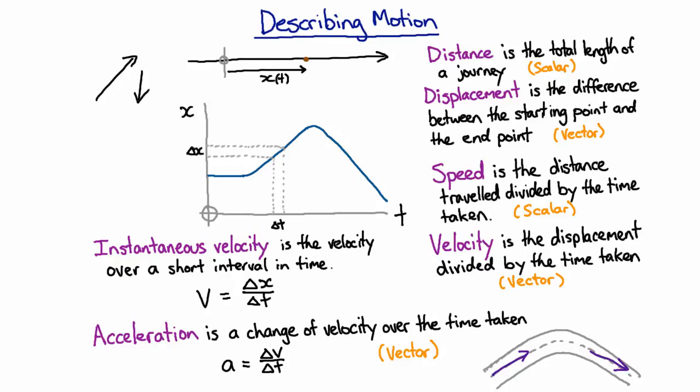Once again you can talk about an instantaneous acceleration or an average acceleration in exactly the same sense as you do for velocity. Instantaneous acceleration is the acceleration defined over a short period of time, and average acceleration is the acceleration defined over some large period of time.